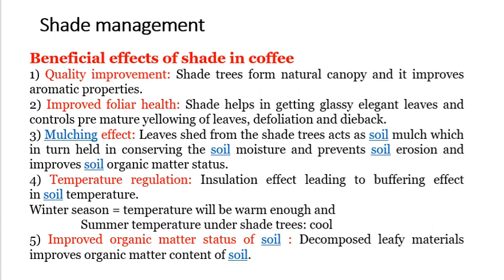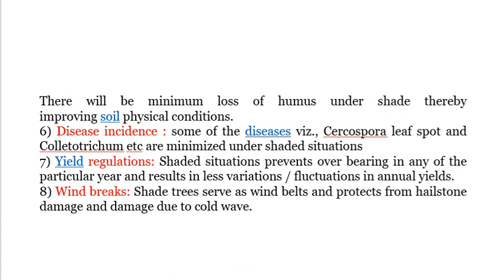Improved organic matter status of soil: decomposed leafy material improves organic matter content of soil, with minimum losses of humus under shade, thereby improving soil physical properties. Disease incidence: some diseases like leaf spot and Colletotrichum are minimized under shade. Yield regulation: shade prevents overbearing in any particular year, resulting in less fluctuation in annual yields. Windbreaks: shade trees serve as windbreaks and protect from hailstorm damage and damage due to cold waves.